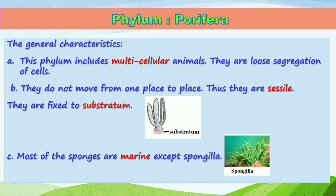The second characteristic is that they do not move from one place to another. In their adult stage they are fixed in a particular place — they are sessile. Generally they are aquatic. Though they move from one place to another in their larval stage, in the adult stage they are fixed in one place. The place where they are fixed is called the substratum.